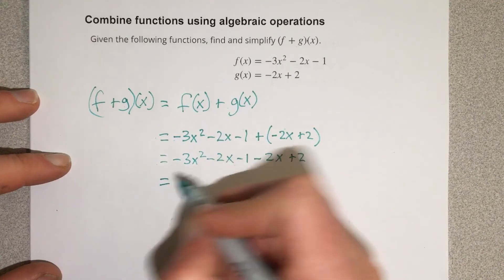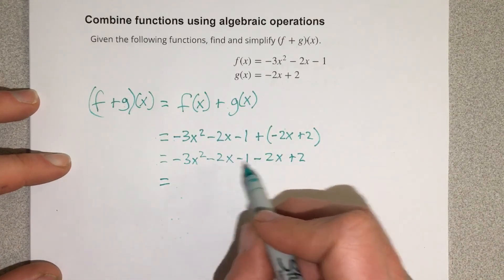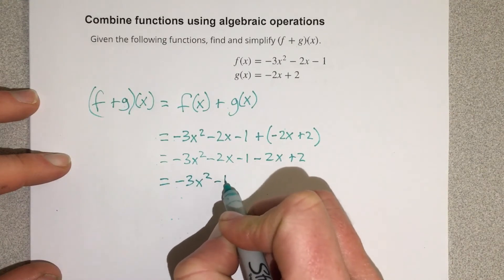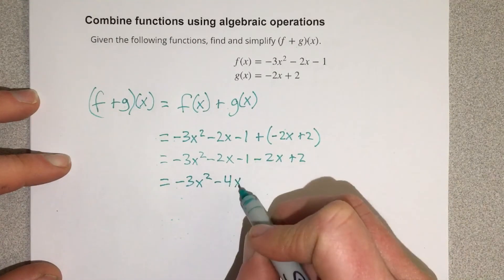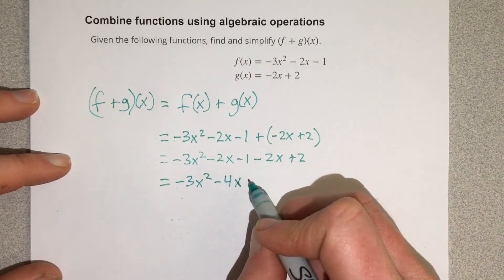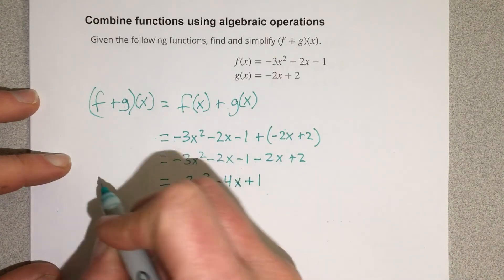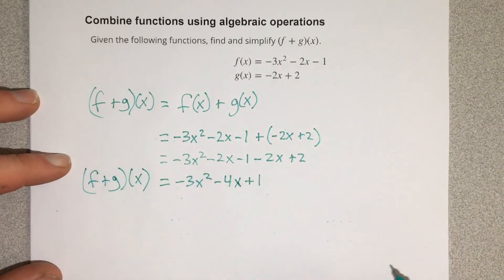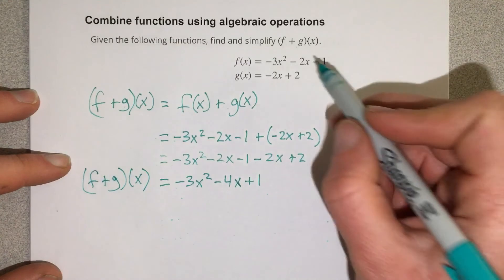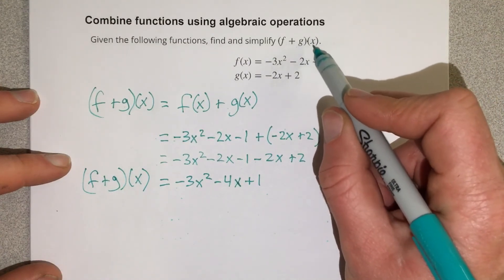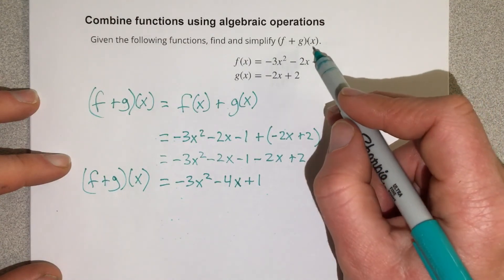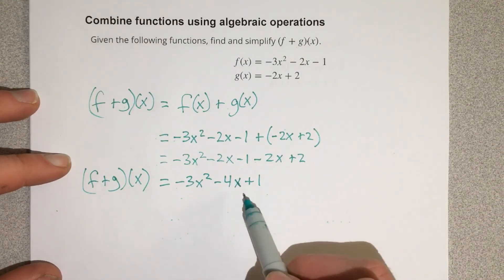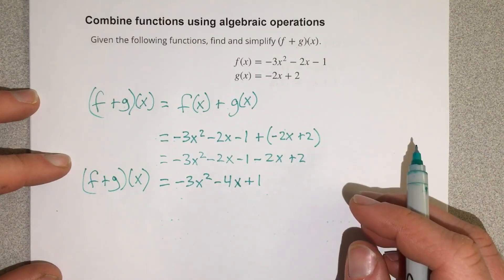Combine some things together. We add negative 2x and negative 2x, which would be negative 4x. So we have negative 3x squared minus 4x. Then we take the negative 1 and add it with the 2, and we get a positive 1. So this is the f plus g of x function. And if they ask us to evaluate at x equal 2, we could plug 2 in for x in this equation and figure out what f plus g of 2 would be.